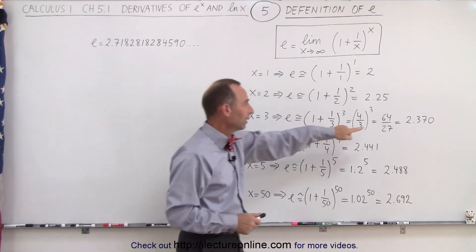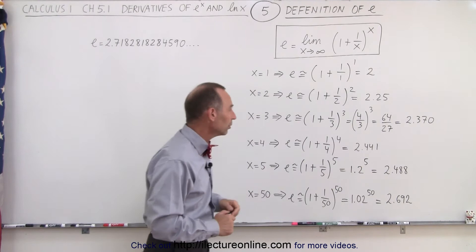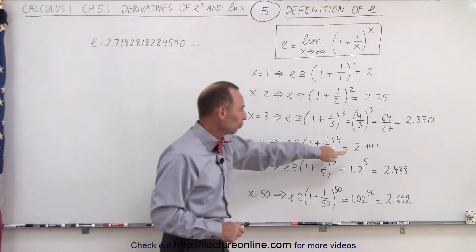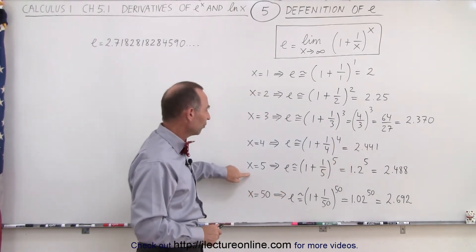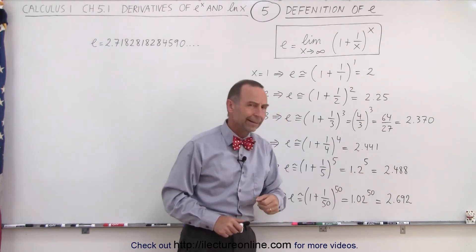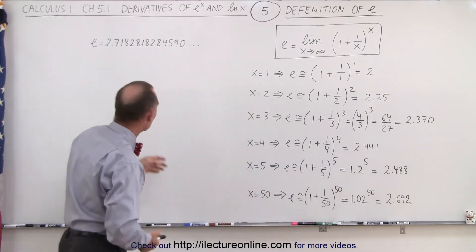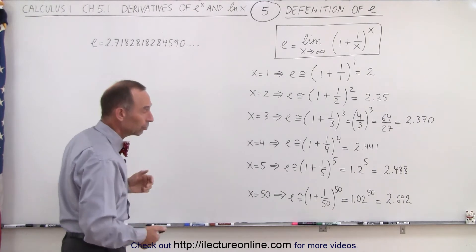When x is equal to 3, it now becomes 2.370. When x equals 4, 2.441. x equals 5, 2.488. It seems to take a long time to get close to the number that e is actually equal to.